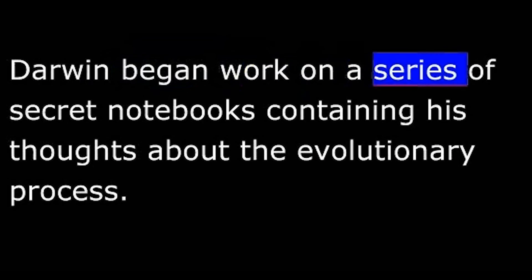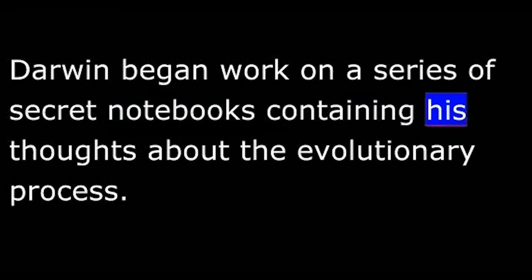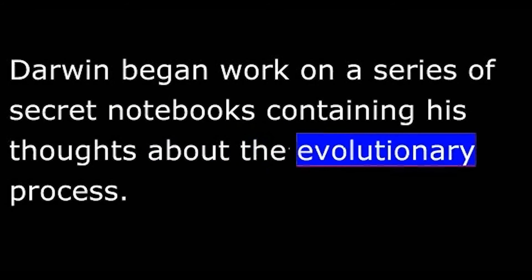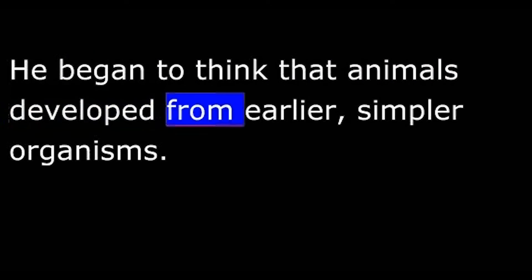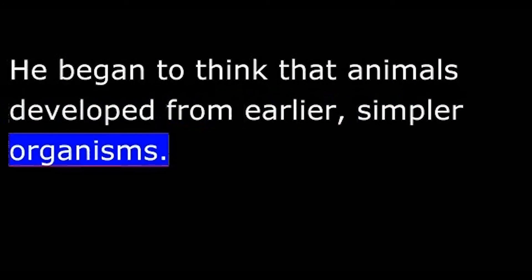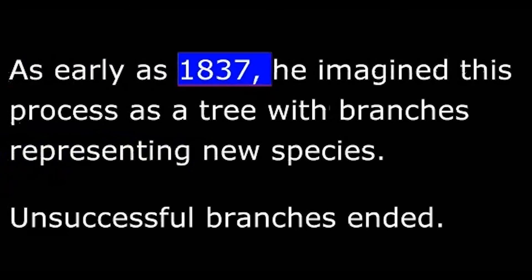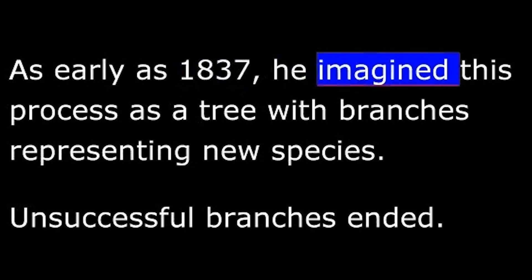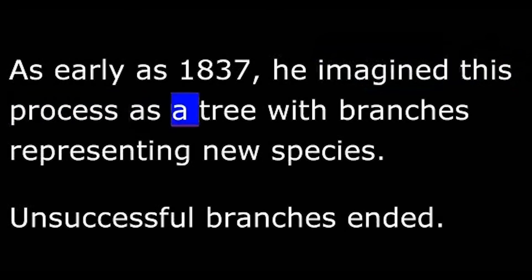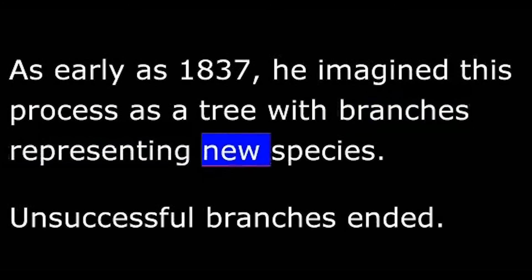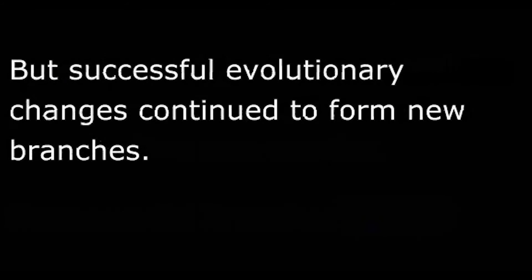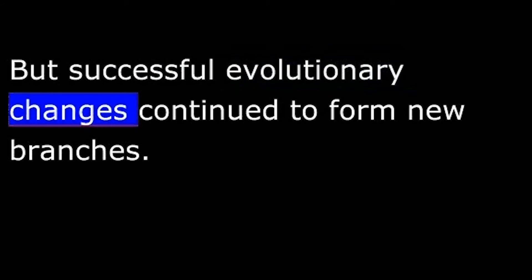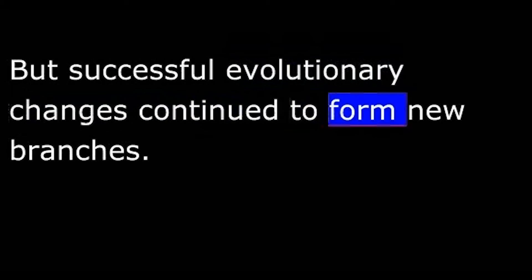Darwin began work on a series of secret notebooks containing his thoughts about the evolutionary process. He began to think that animals developed from earlier, simpler organisms. As early as 1837, he imagined this process as a tree with branches representing new species. Unsuccessful branches ended, but successful evolutionary changes continued to form new branches.